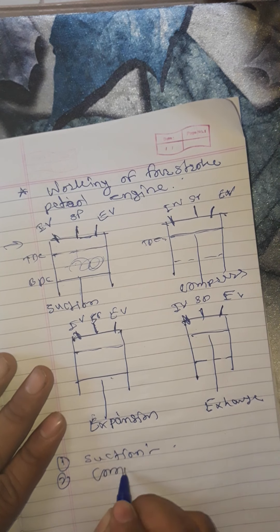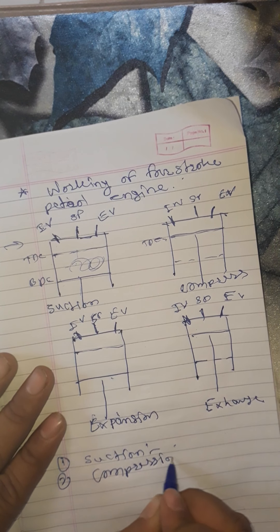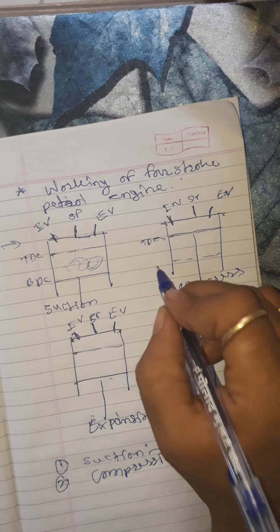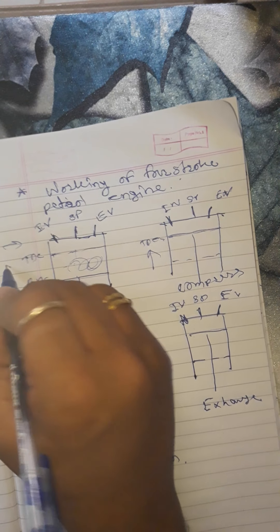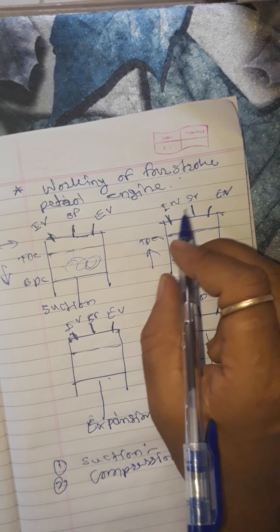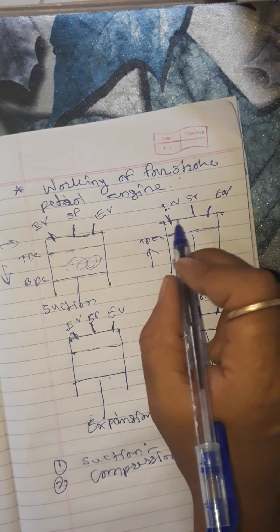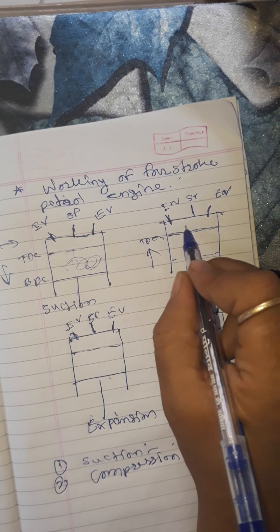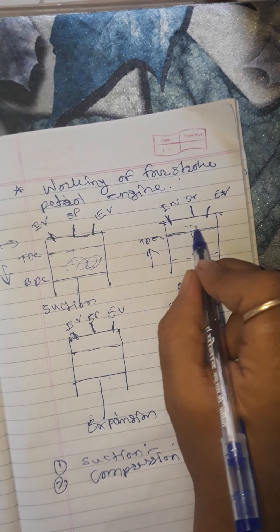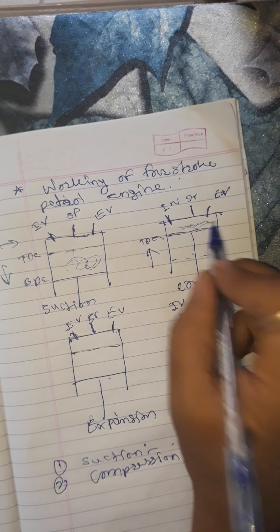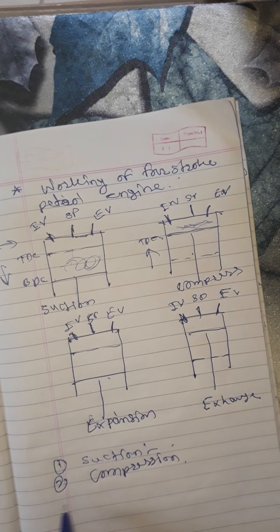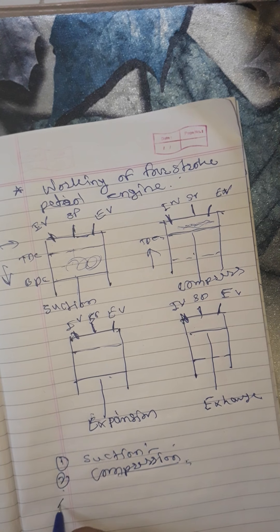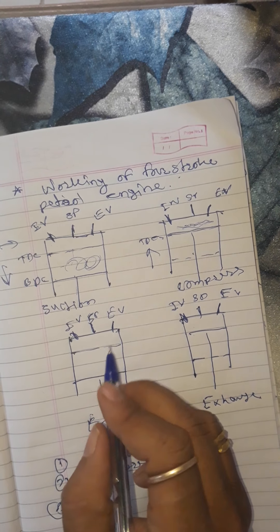Second stroke — compression stroke: the piston moves from BDC to TDC. At this time, both valves are closed and the charge gets compressed inside the cylinder.